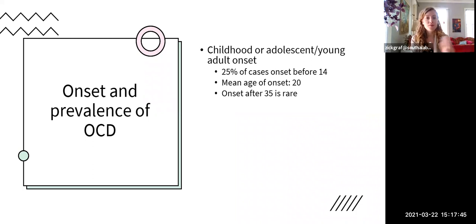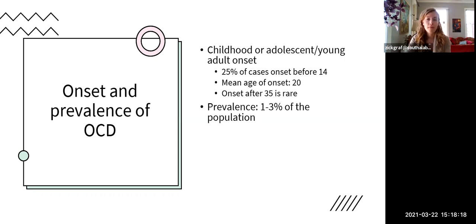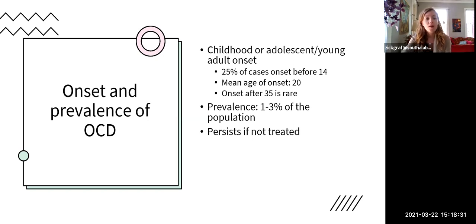OCD tends to have an onset in childhood, adolescence, or young adulthood. About a quarter of cases have a pediatric onset, and on average onset is between early adolescence and mid young adulthood — roughly ages 14 to 25. Onset after 35 is relatively uncommon. OCD is strongly neurobiological and tends to start early in life. Its prevalence of 1–3% is more like bipolar disorder or schizophrenia — much lower than anxiety disorders and depression. If untreated, OCD tends to persist but can wax and wane; symptoms tend to worsen when stress and overall anxiety are higher.